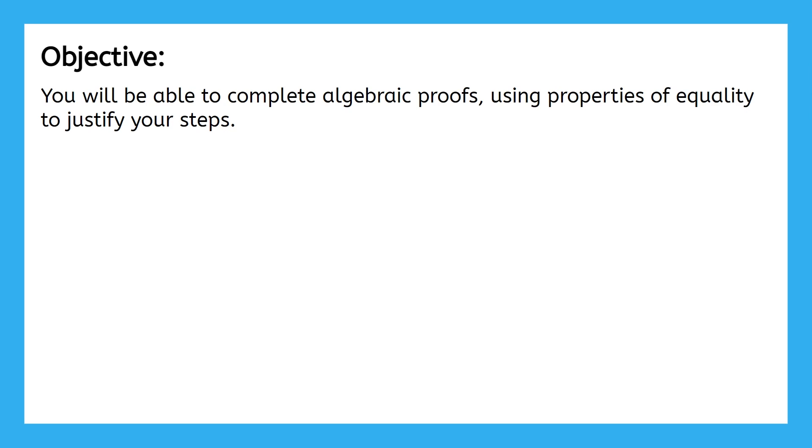Whoa, there's a lot of vocabulary in that objective. Let's break this down. Algebraic proofs just mean proofs with equations. Properties of equality are the specific category of properties you're going to need today. You'll find these in section 1 of your property review activity from our last lesson. Make sure to keep that page handy today.